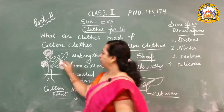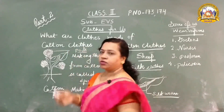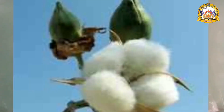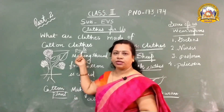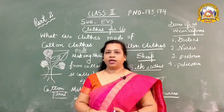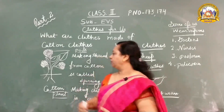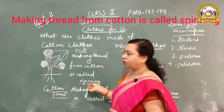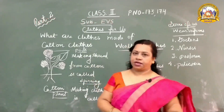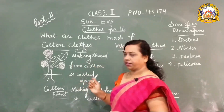Cotton is grown in pods — P-O-D-S — called 'fanis.' We pick the cotton from these pods. Making thread from cotton is called spinning. So we make thread from the cotton plant, and this process of making thread from cotton is called spinning.